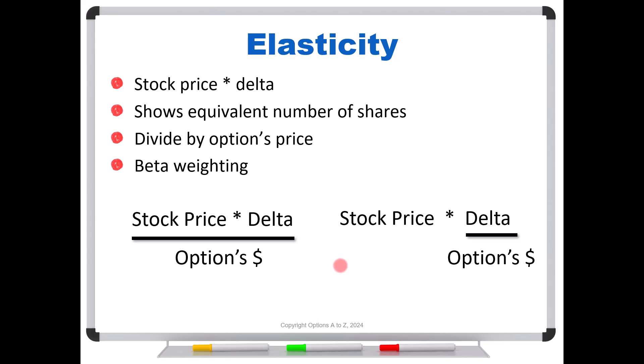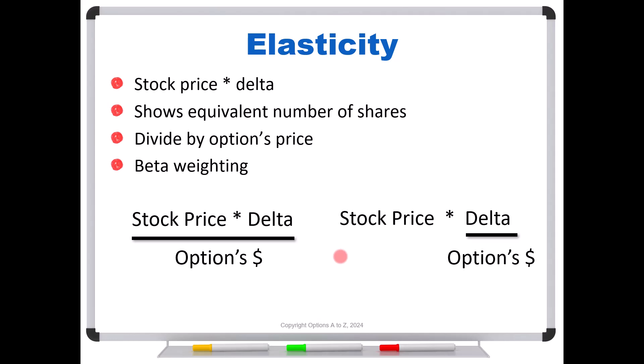That's what the elasticity is showing you. But remember, it's only good for that next small change in the stock's price, roughly a 1% change, and that number is going to decrease as that option continues to go deeper in the money. So to see that in action, why that's going to happen, let's jump over to an Excel spreadsheet and look at some examples.